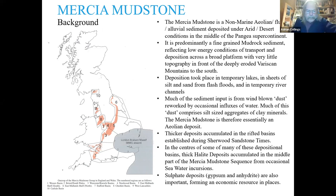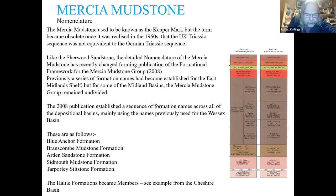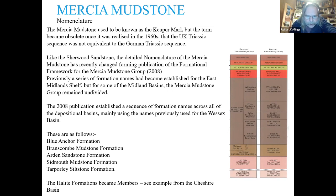Regarding nomenclature, it was originally known as Keuper Marl, but the term became obsolete once it was realized in the 1960s that the UK Triassic sequence was not equivalent to the German Triassic sequence. Like the Sherwood Sandstone, the detailed lithostratigraphy of the Mercia Mudstone has recently changed following publication of a formational framework in 2008. Previously, formation names had become established for the East Midland shelf, but for some Midland basins the Mercia Mudstone remained undivided. The 2008 publication established formation names across all depositional basins, mainly using names from the Wessex Basin — the Blue Anchor, Branscombe, and the top Poly Silk Stone and Halite formations became members.